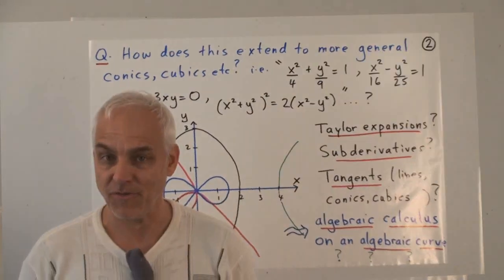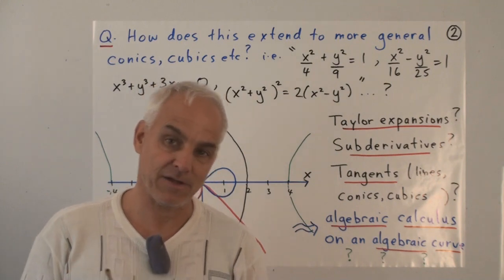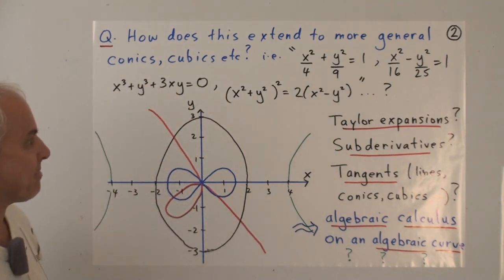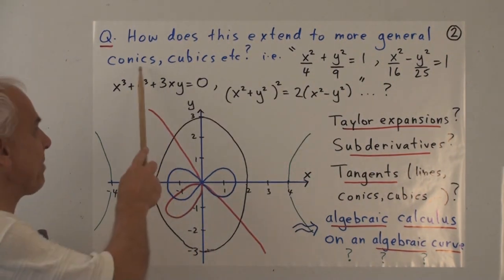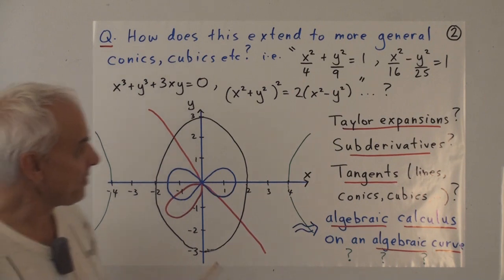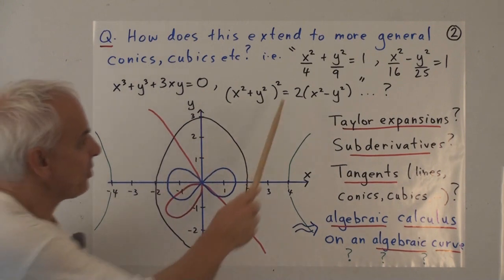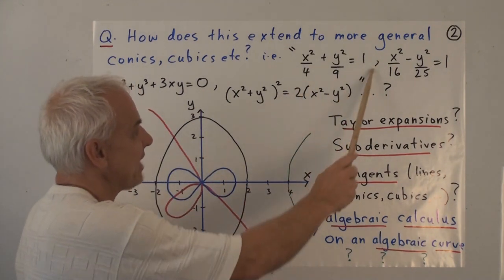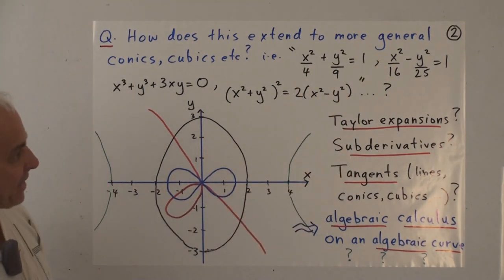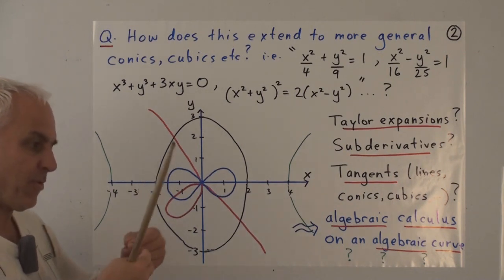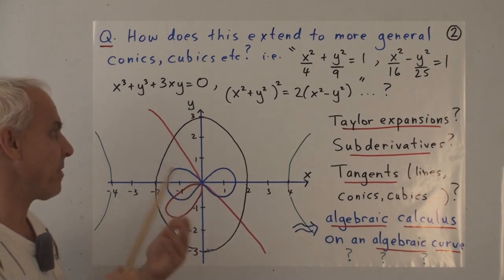Some of you might also be wondering how we're going to extend this elementary calculus to go beyond functions to considering more general curves—for example, conics or cubics. For example, if you're interested in an ellipse, in the standard formulation an ellipse like this has an equation involving both x and y, not just y equals a function of x, but a relation involving both x's and y's together.